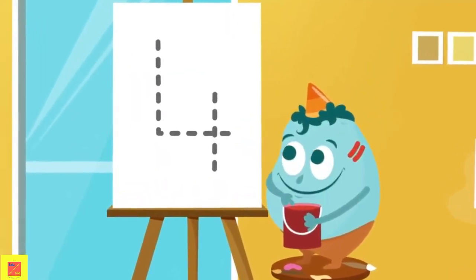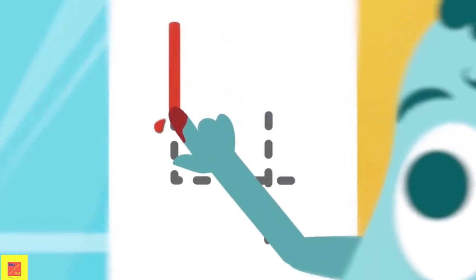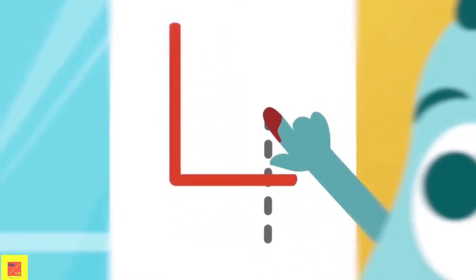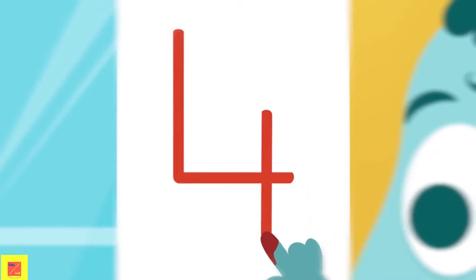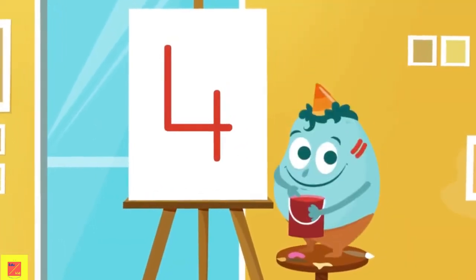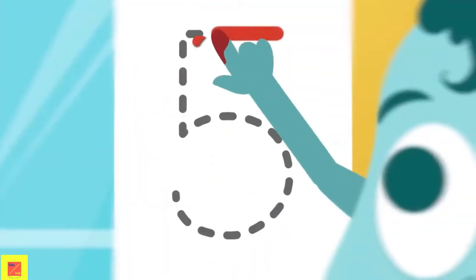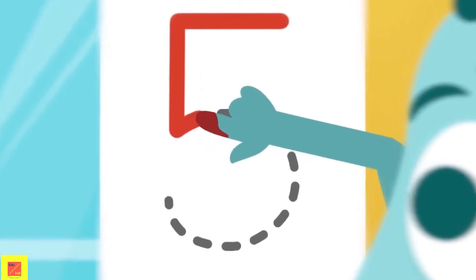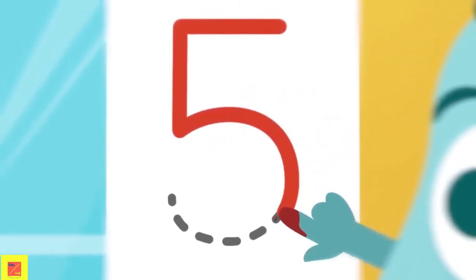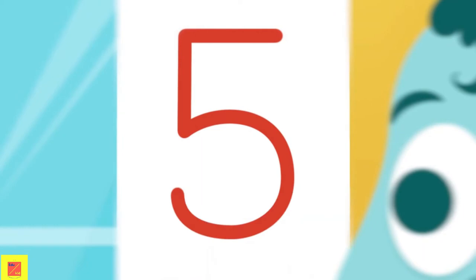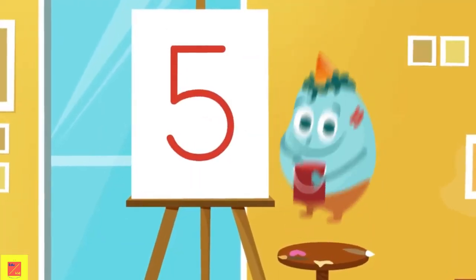Let's do another one. A straight line here, then the next one here, and then to finish, one from here down. What number is the number 4? Let's do another one. A straight line towards the left, a straight line down, and now a curve like this. And this number — do you know it? What number is the number 5? Very good!